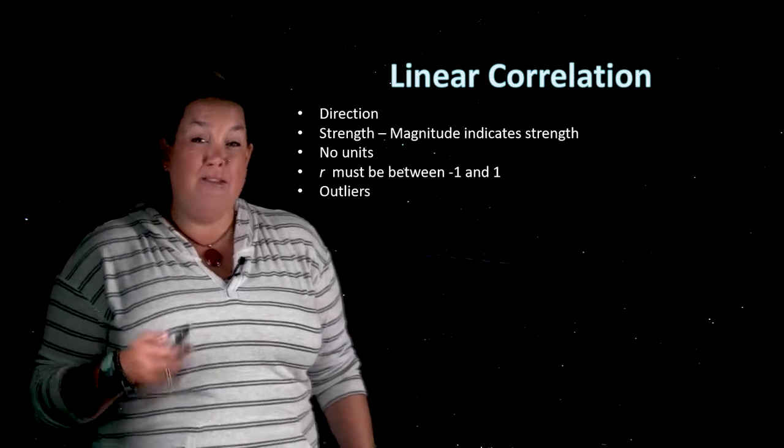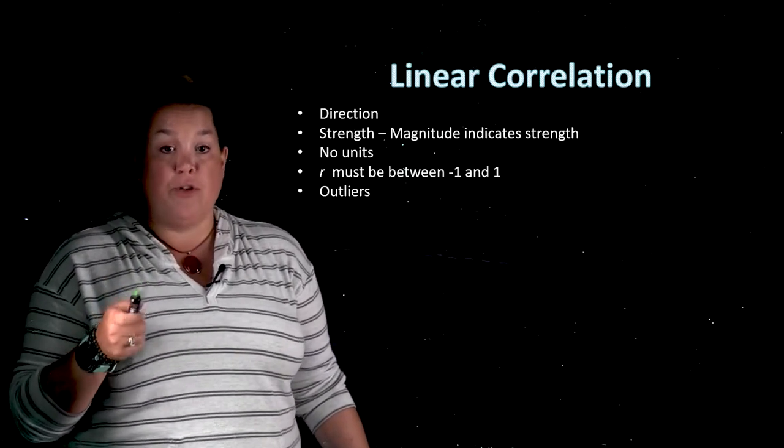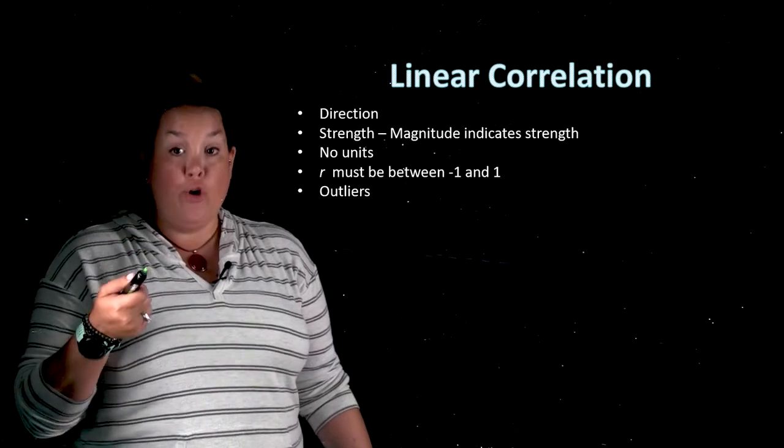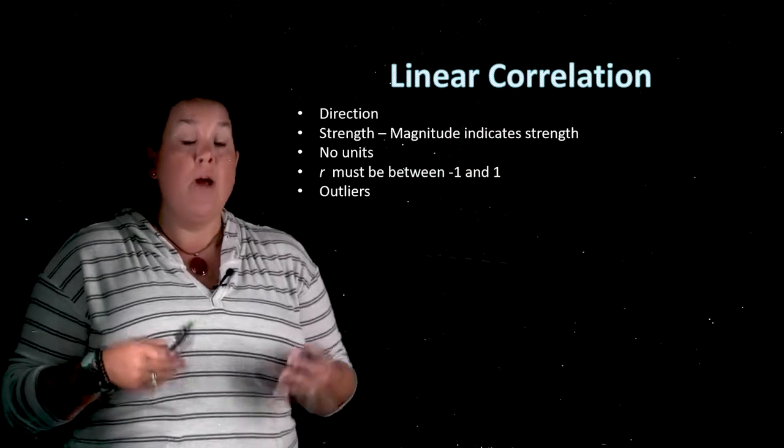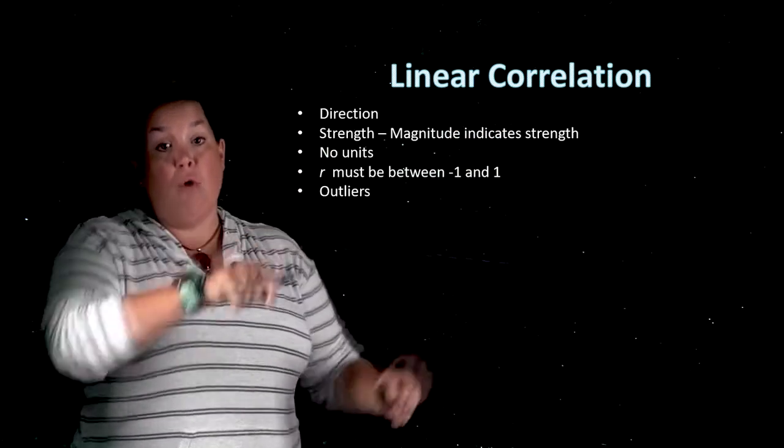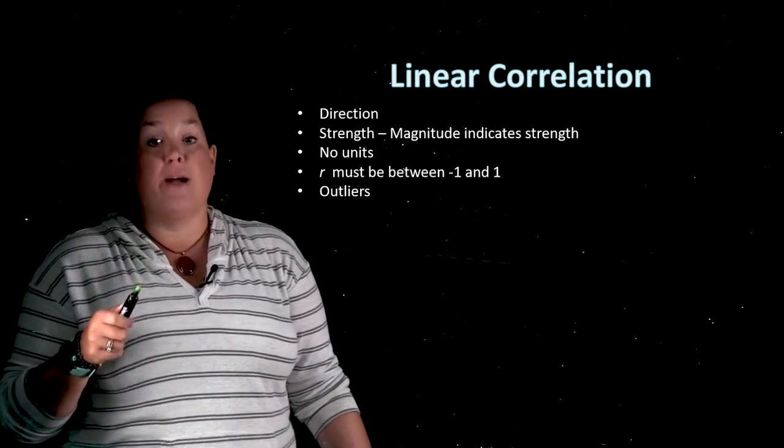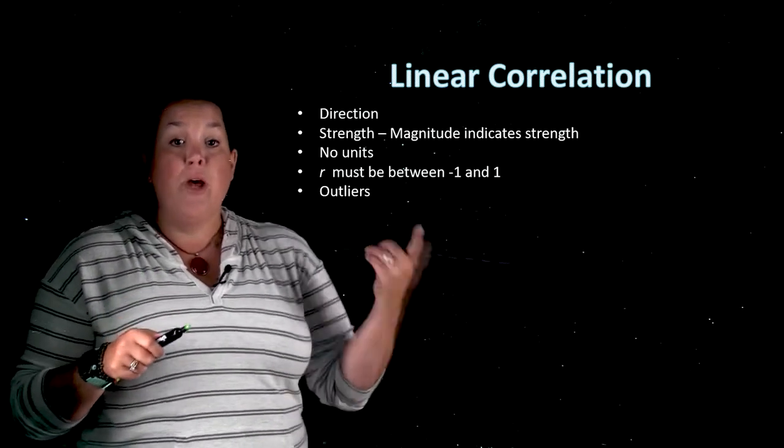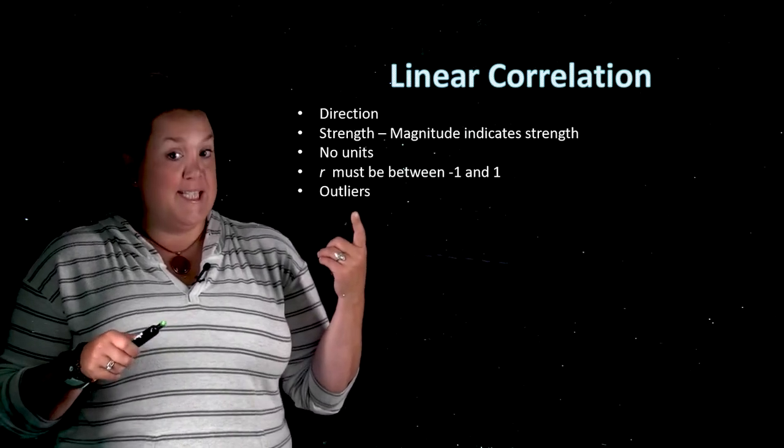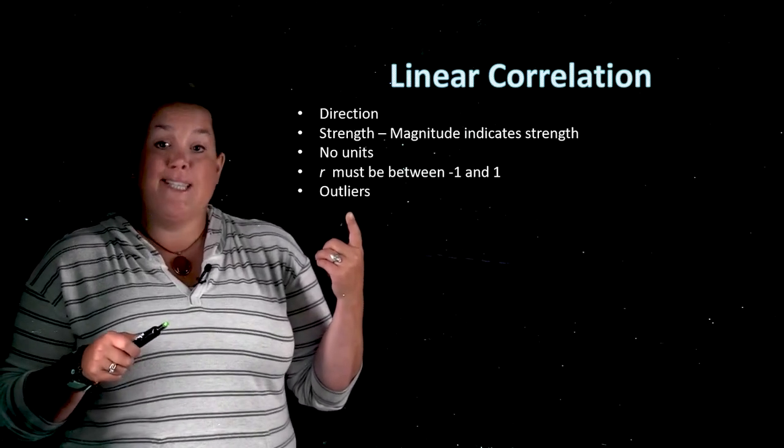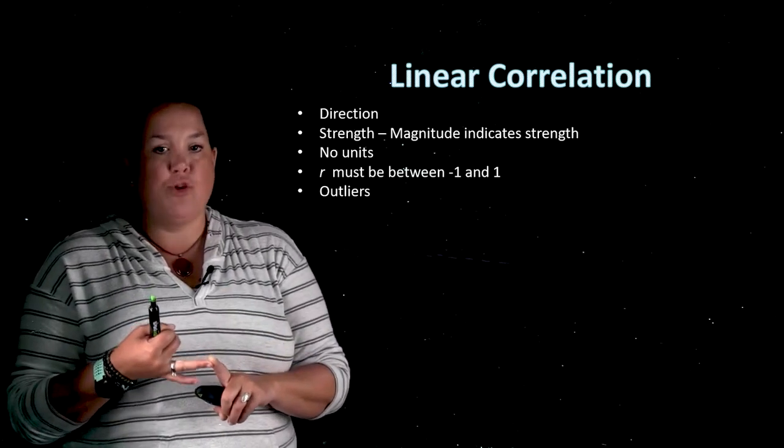The next thing we have is that outliers significantly impact these correlation coefficients. So it could be that it makes it stronger if you've got a big outlier, but it's in line with the overall pattern. But if it's straying from the overall pattern, it's going to significantly negatively impact that correlation coefficient. So this would be a time that you want to make sure when you see an outlier that it's a legitimate outlier and it's not maybe a typo or somebody who snuck into the sample that shouldn't have been included.